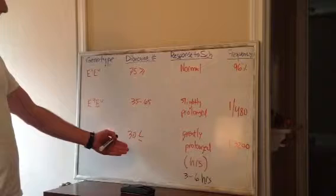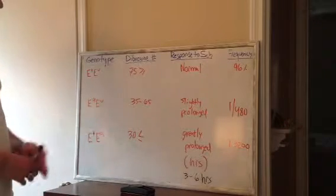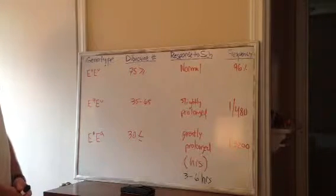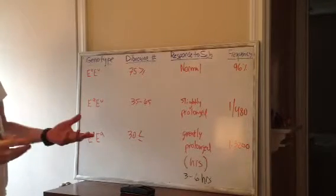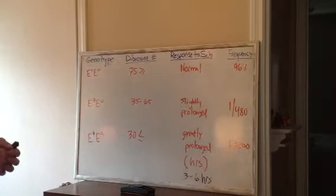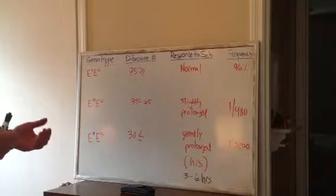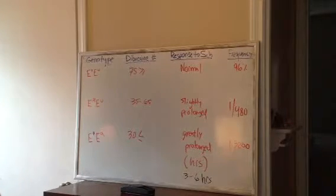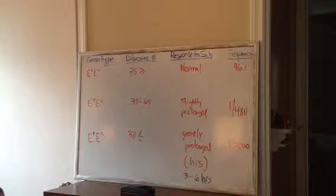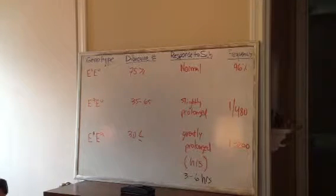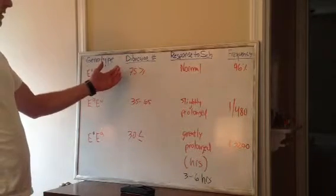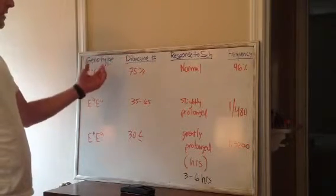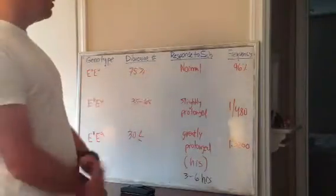These numbers represent their dibucane number. What dibucane is, it is a local anesthetic that we can draw blood from somebody, and we can put a little bit of dibucane in the blood, and if 75% or greater of plasma cholinesterase is bound to the local anesthetic, then we know that person most likely will have a normal response to our succinylcholine.